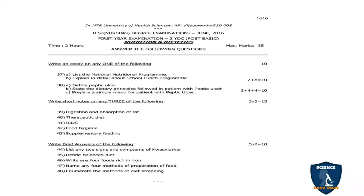Short notes (5 marks each), answer any 3: digestion and absorption of fat; therapeutic diet; ICDS; personal hygiene; supplementary feeding program. Out of these 5, answer any 3, making 15 marks. Two-mark questions: list any 2 signs and symptoms of kwashiorkor; define balanced diet; write any 4 foods rich in iron; name any 4 methods of preparation of food; enumerate the methods of diet screening.